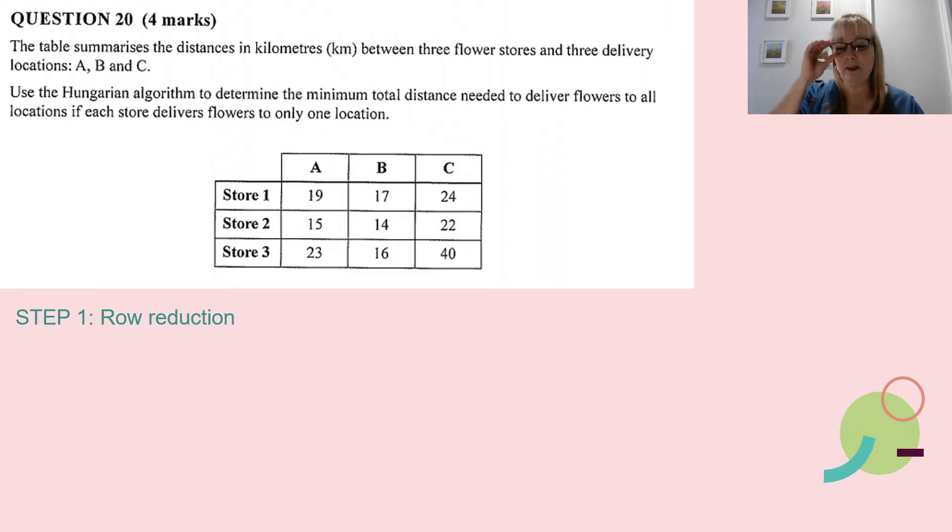Firstly, we're going to start with row reduction. I'm looking for the smallest number in each row. Starting with row one, the smallest number there is 17. I'm going to subtract 17 from each of those values in the matrix, so what I'm left with is a new matrix with 19 take away 17 gives me 2, 17 take away 17 gives me 0, 24 take away 17 gives me 7. So I've reduced the first row.